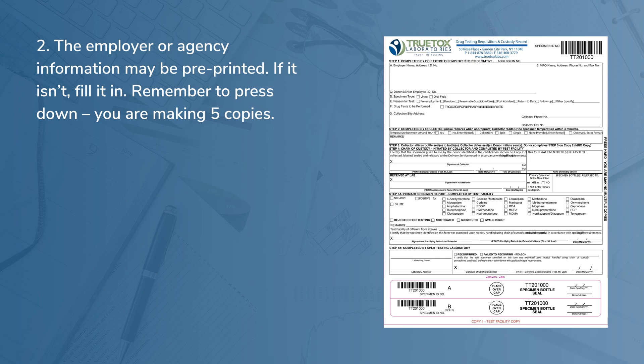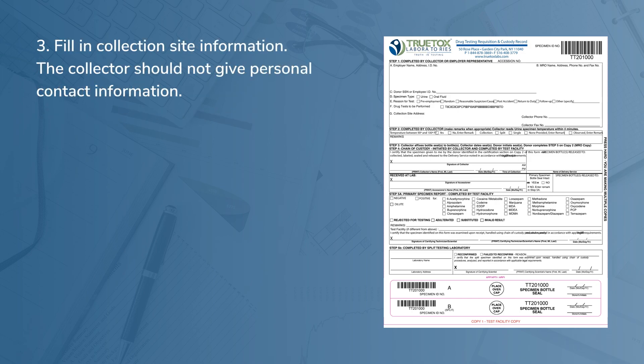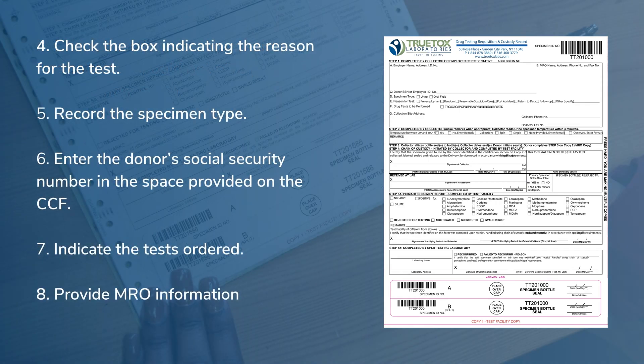The employer or agency information may be pre-printed. If it isn't, fill it in. Remember to press down, because you're making five copies. Next, fill in collection site information. The collector should not give personal contact information. Check the box indicating the reason for the test. Record the specimen type. Enter the donor's social security number in the space provided on the CCF. Indicate the test ordered.